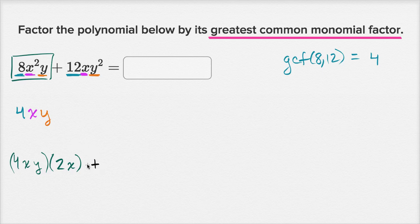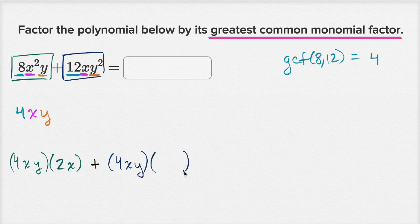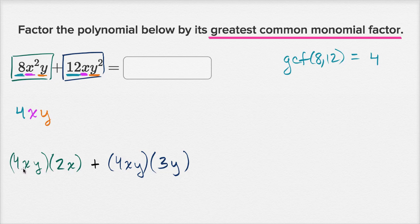Now let's do the same thing with the second term to confirm this is their largest common monomial factor. I want to write 12xy² as the product of 4xy and another monomial. Four times 3 is 12, x times 1 is x, and y times y is y². So 4xy times 3y gives 12xy². You can verify: 4 times 3 is 12, you get your x, and y times y is y squared.